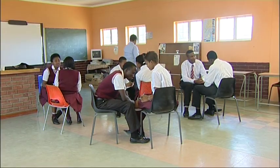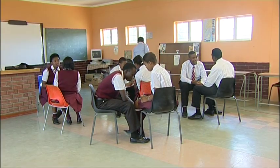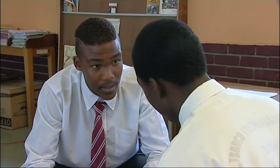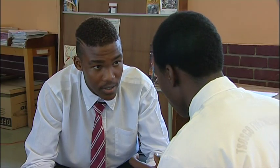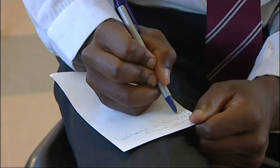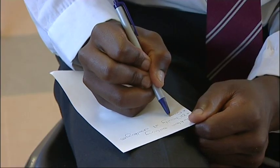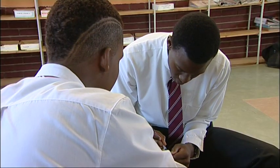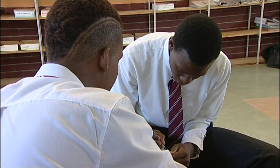In the first role-play session, have player one in each pair give reasons why he or she thinks he or she would not be a not-so-perfect entrepreneur. Player two in each pair must write down all the reasons provided by player one.